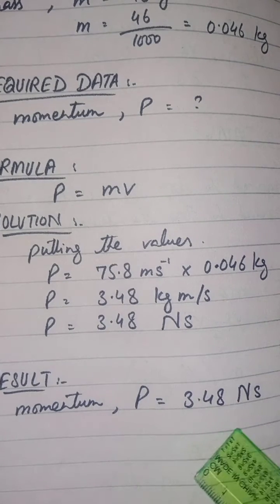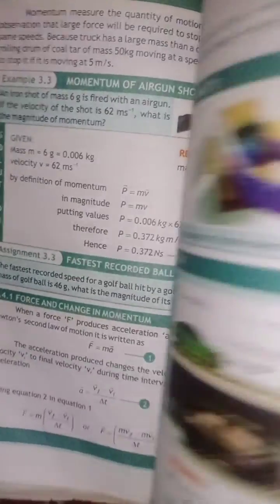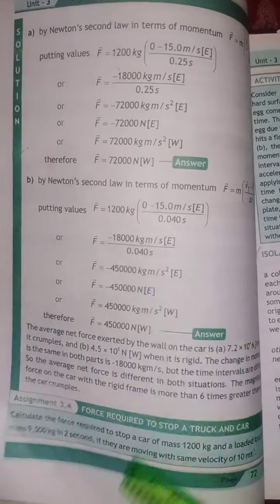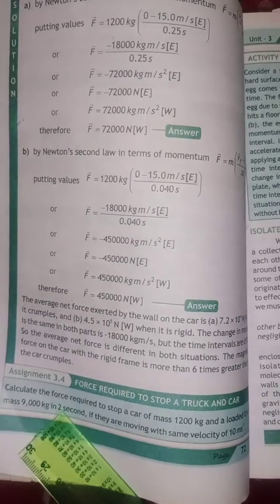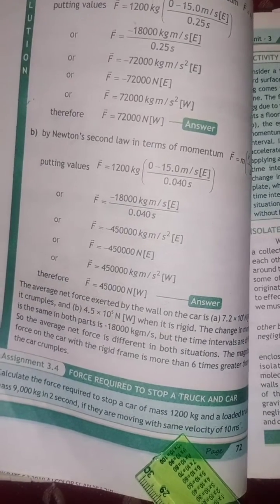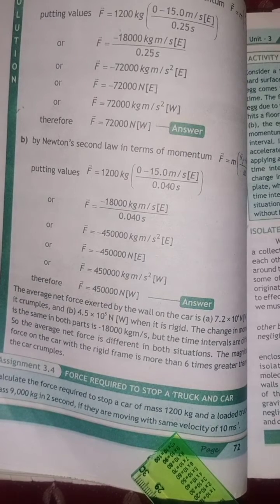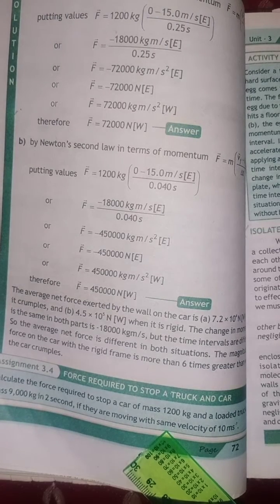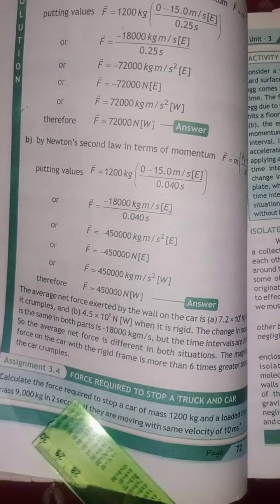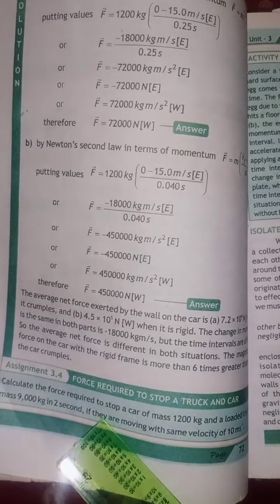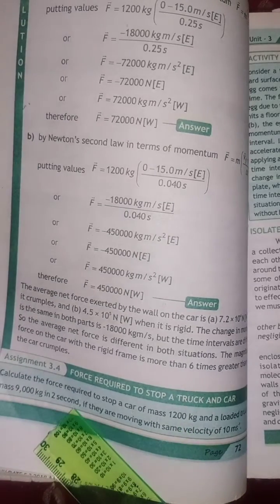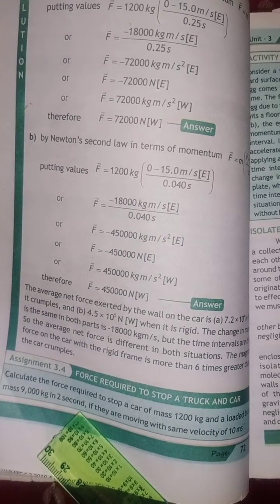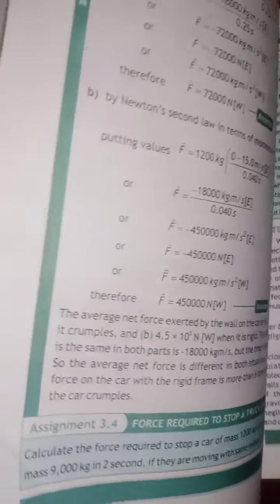Momentum equals 3.48 Newton-second. Now for the fourth assignment on page number 73: calculate the force required to stop a car of mass 1200 kg and a loaded truck of mass 9000 kg in two seconds if they are moving with the same velocity of 10 meter per second.